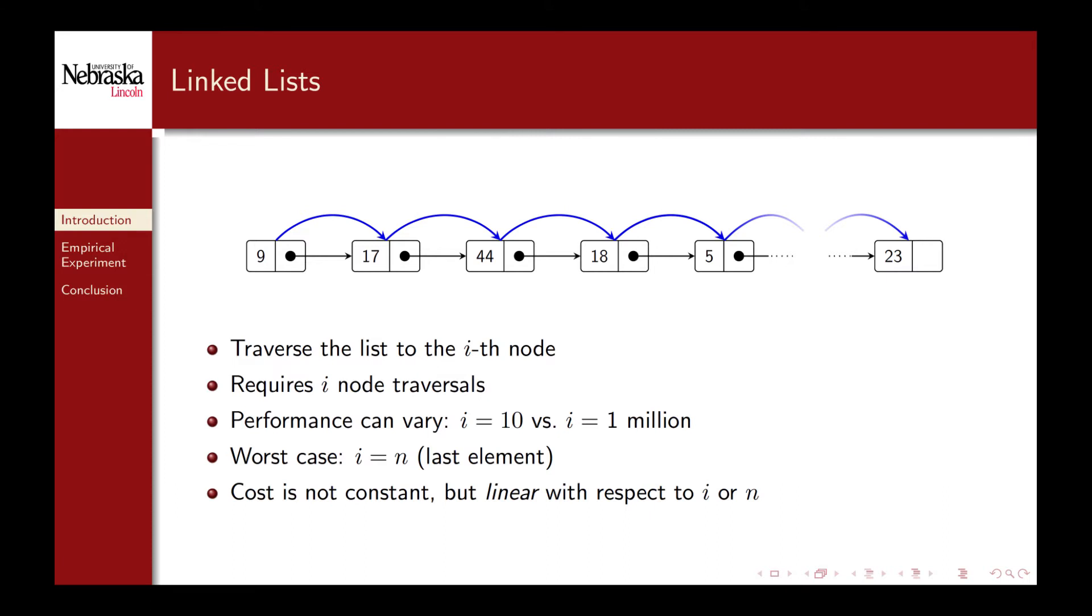There's a big difference between getting the element at the index 10 and getting an element at index 1 million for example. In general the worst case is when we wish to get the last element at index n. The cost is not constant for this operation but varies linearly with respect to the index i or more generally with the size of the list n.